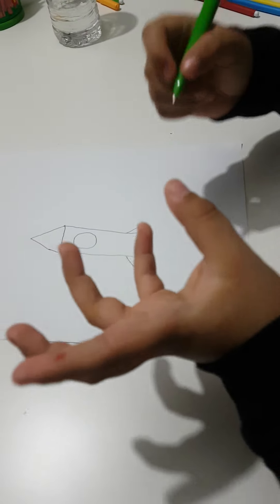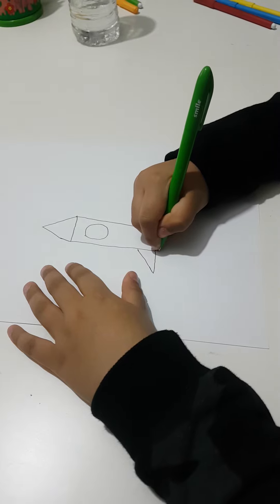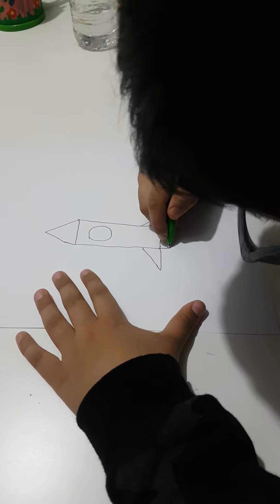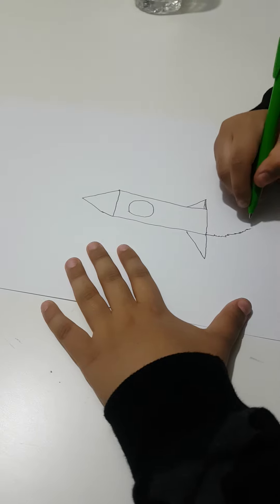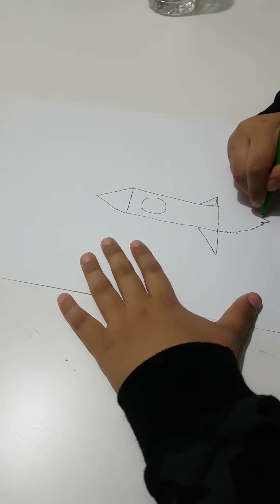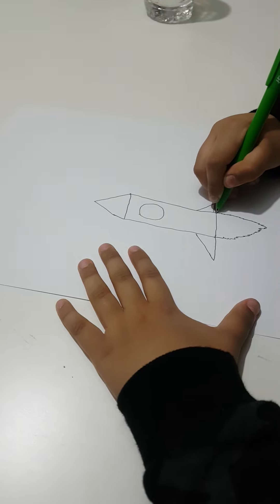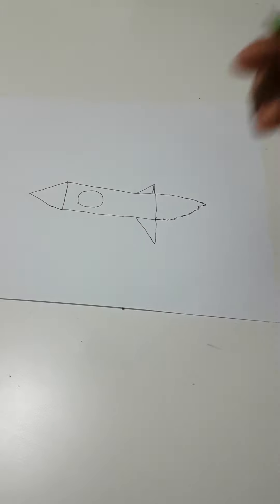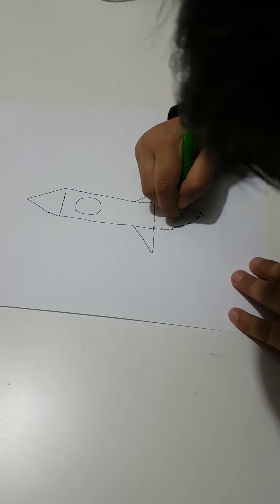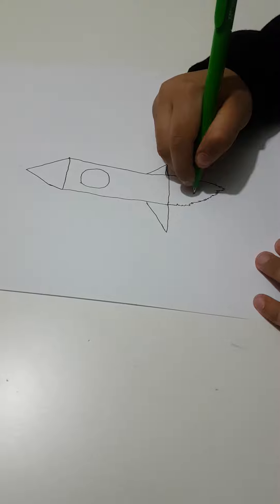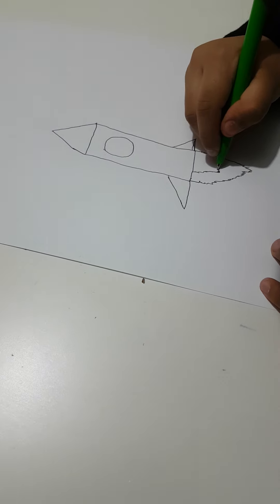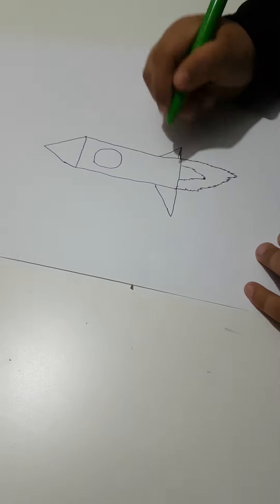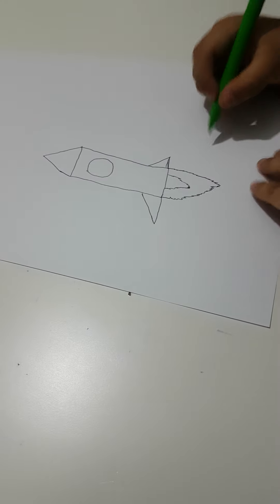The next bit is that now we will make it like this, zig-zag. Over here, now inside we're going to make another triangle but it will be small, up to here, up to here, this dot.